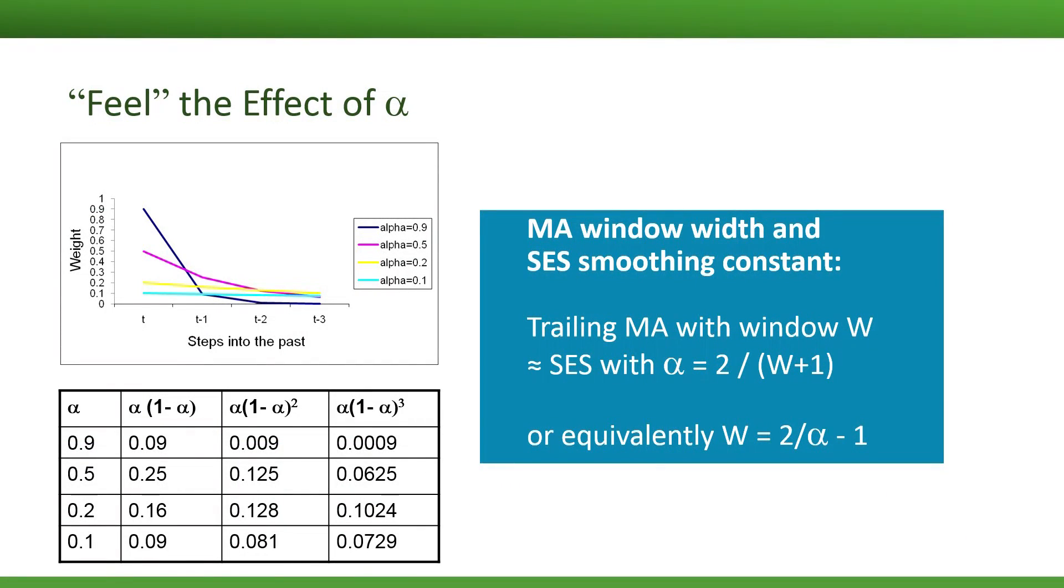You might be wondering about the relationship between a moving average and simple exponential smoothing. They are a little bit different, but we can actually achieve results that are pretty similar if we choose the smoothing constant to be similar in a way to the moving average window. For example, if we choose a moving average window width of w, then it would be almost equivalent to using simple exponential smoothing with alpha equal to 2 over (w plus 1).